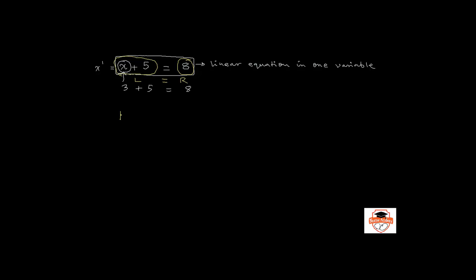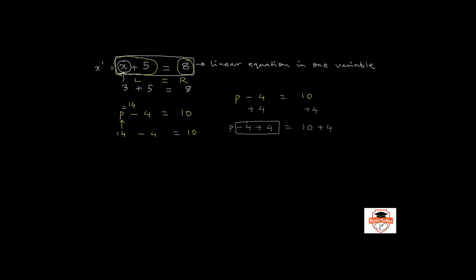Consider the equation p - 4 = 10. One way to find p is to use some logic and guess the answer. We know that only 14 - 4 will give you 10, and therefore we can safely say that p is equal to 14. But if you want to go the formal way, technically you should be adding 4 to both sides of the equation. The left hand side becomes p - 4 + 4, equal to the right hand side which is now 10 + 4. Minus 4 plus 4 is equal to 0, so p is equal to 14.